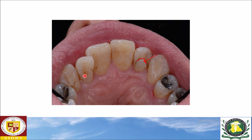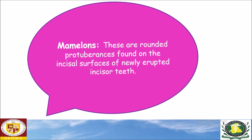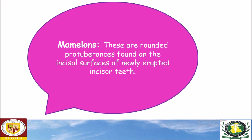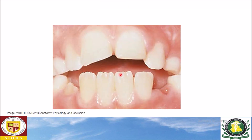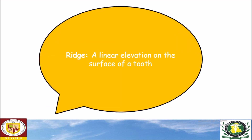You can compare it with the contralateral side — here the palatal surface of the maxillary lateral incisor is smooth. Mamelons are the rounded projections found on the incisal surfaces of newly erupted teeth. In this clinical picture you can see newly erupted permanent mandibular incisors, and on the incisal surface you can see these projections called mamelons.